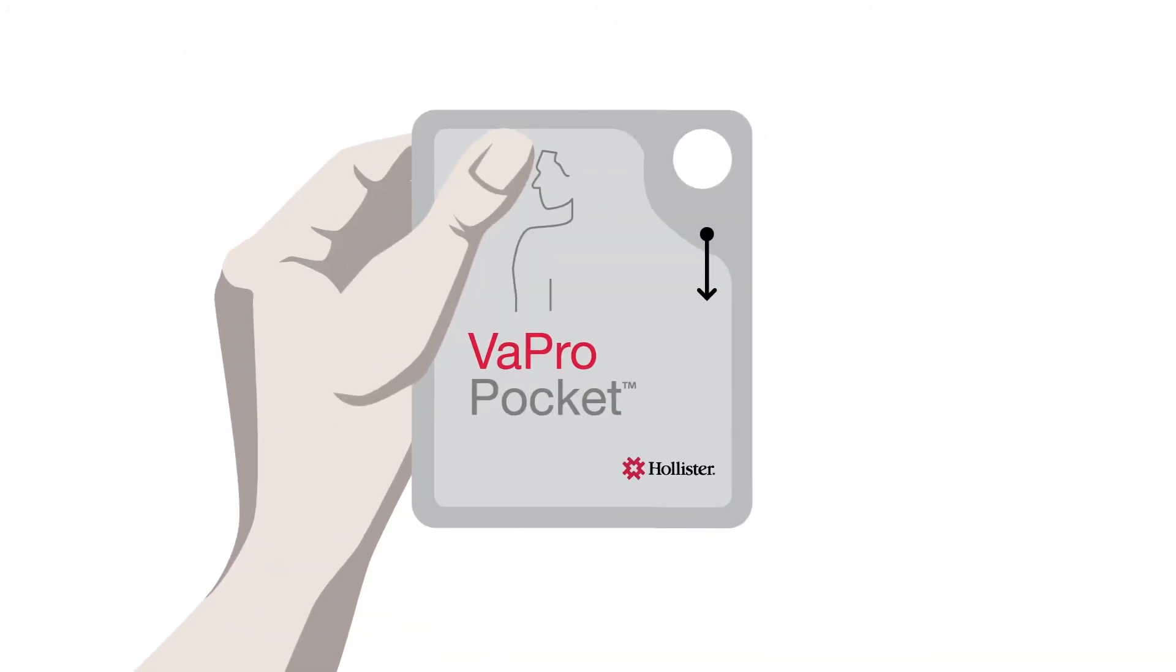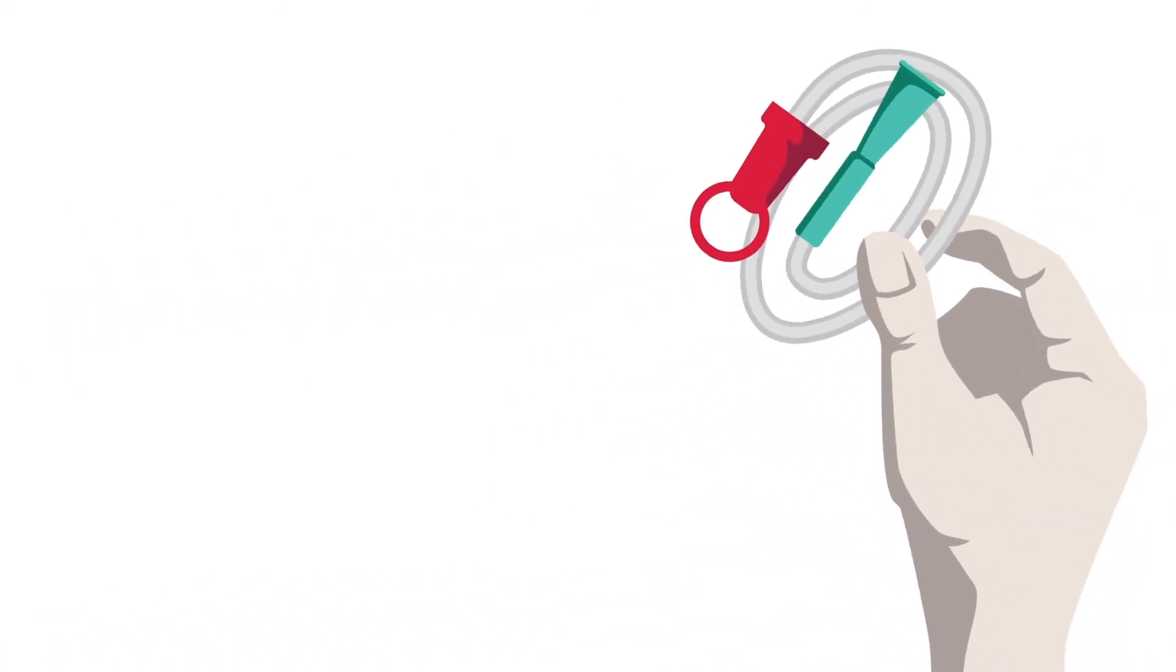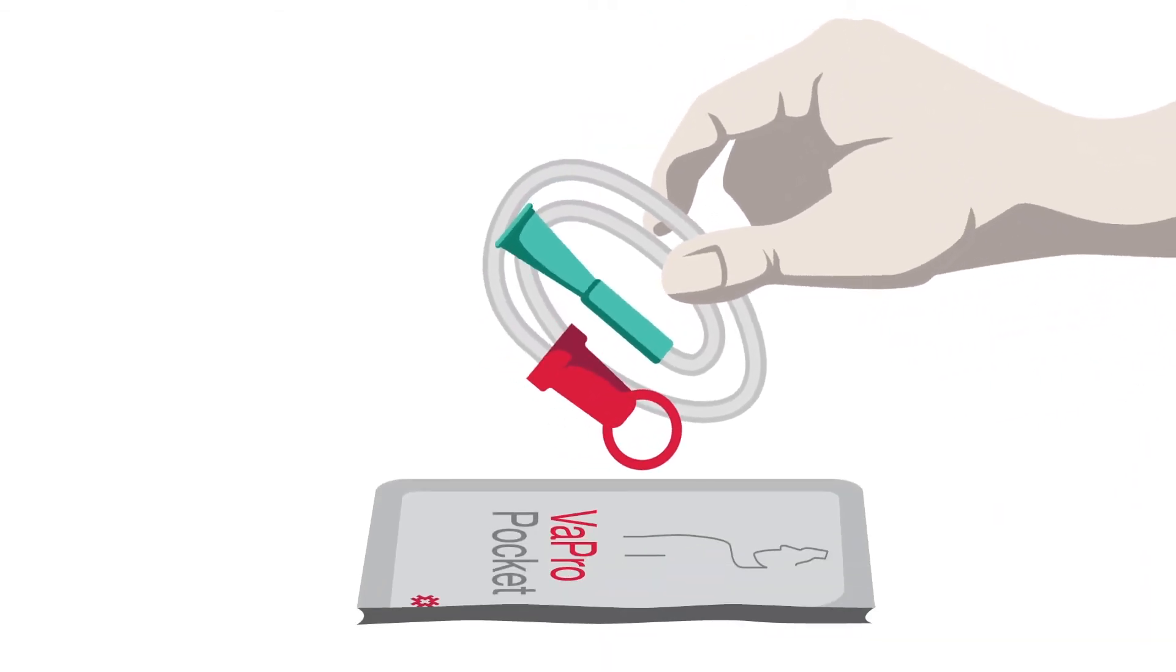After you have washed your hands, you can open the Vapro Pocket Catheter package. This can be done by inserting your thumb in the finger hole or placing your fingers at the top of the strip and tearing down the side of the package. Now the package is open, you can remove the catheter and place it on the open pack, which is left on a flat surface.